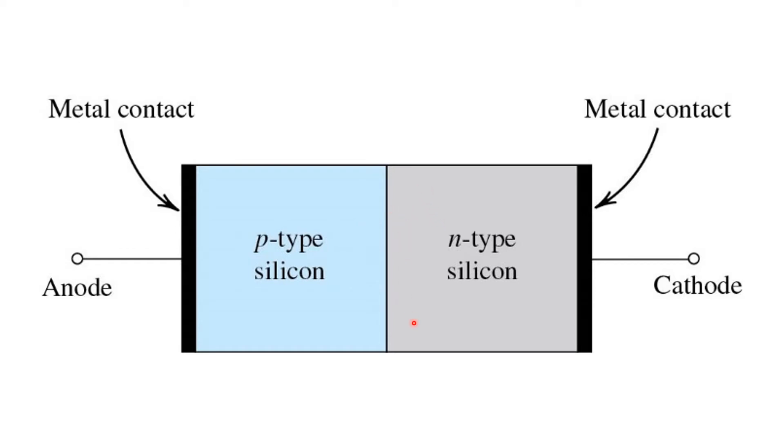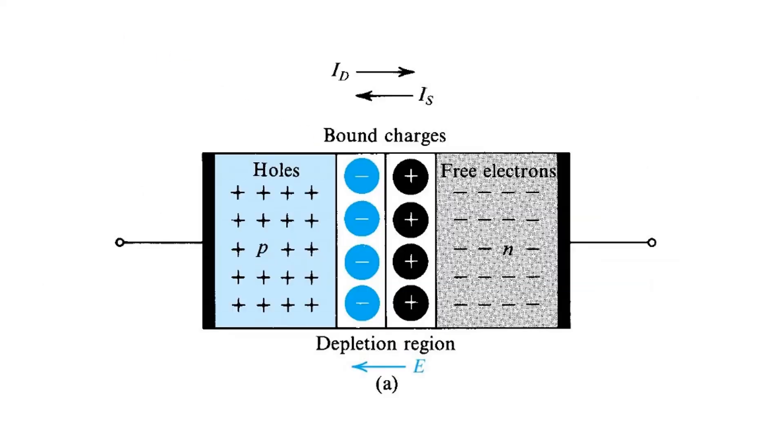And at the same time, we might expect electrons, which exist in much higher concentration on the right, to diffuse over to the left. And that's exactly what happens. Both the electron and the hole diffusion give rise to a net positive diffusion current from left to right across the P-N junction.